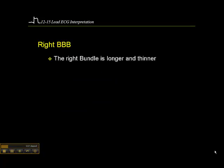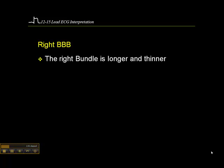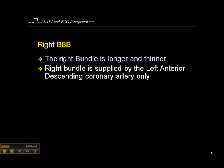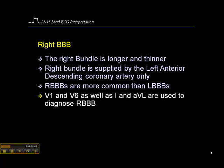Let's look at a right bundle branch block first. The right bundle is longer and thinner compared to the left, which is shorter and thicker. The right bundle is supplied by the left anterior descending coronary artery only. Right bundle branch blocks are more common than left bundle branch blocks.